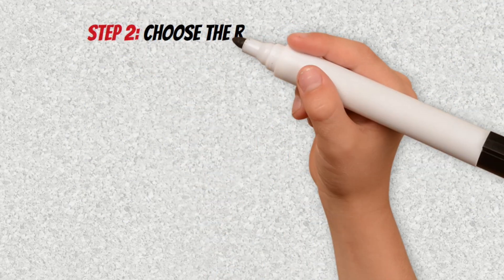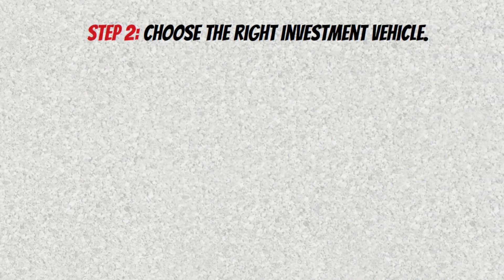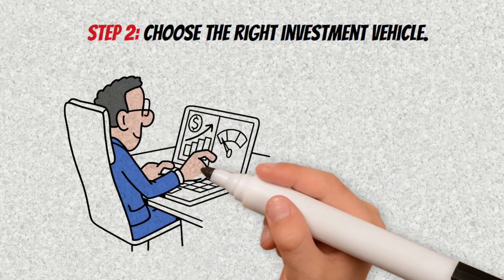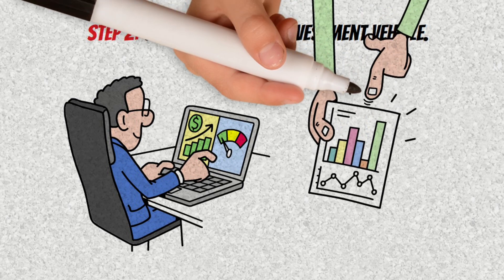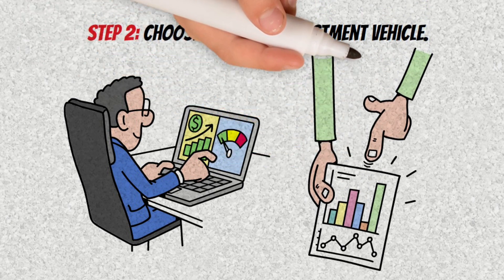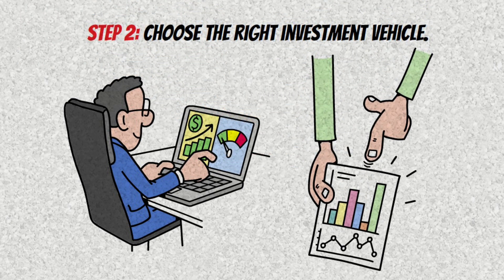Step 2: Choose the right investment vehicle. You need assets that offer security but also growth potential. Index funds, solid company stocks, and investments with automatic dividend reinvestment are great options for compounding.